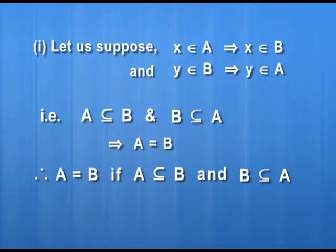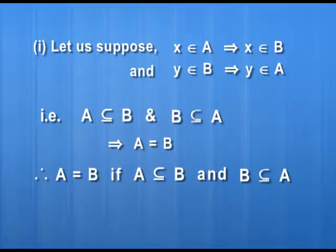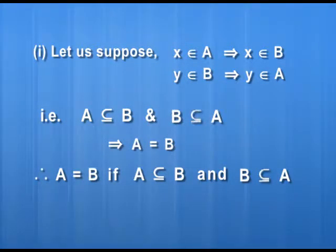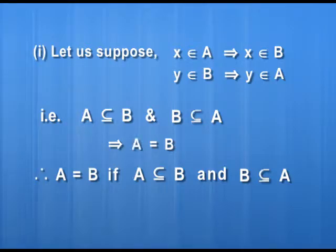If x is an element of A and it implies x is an element of B, then A is contained in B. Now, if A is contained in B, all the elements of A are in B. And if B is contained in A, all the elements of B are in A. That means A has all the elements which are in B and B has all the elements which are in A. So we can conclude that A is equal to B.